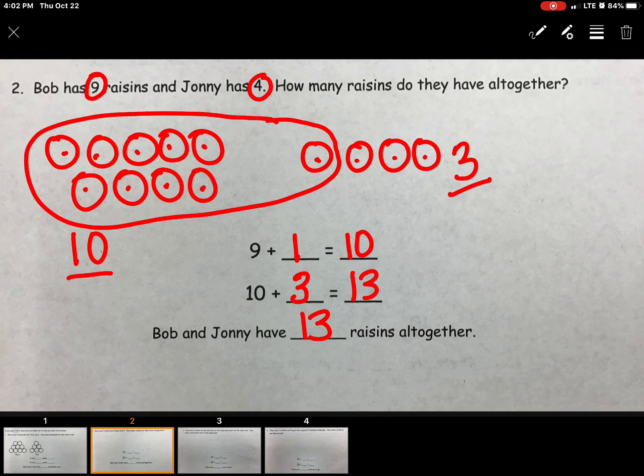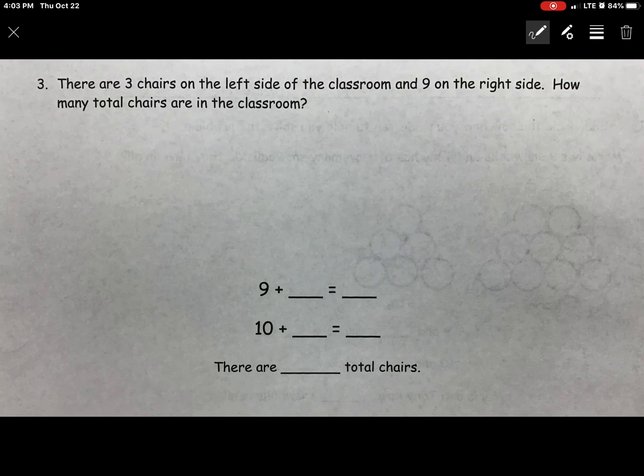All right, we're going to go to our next question. It says there are 3 chairs on the left side of the classroom and 9 on the right side. How many total chairs are in the classroom? Again I'm going to find those math facts and I'm going to draw what I read. There are 3 chairs on the left side of the classroom. 1, 2, 3.